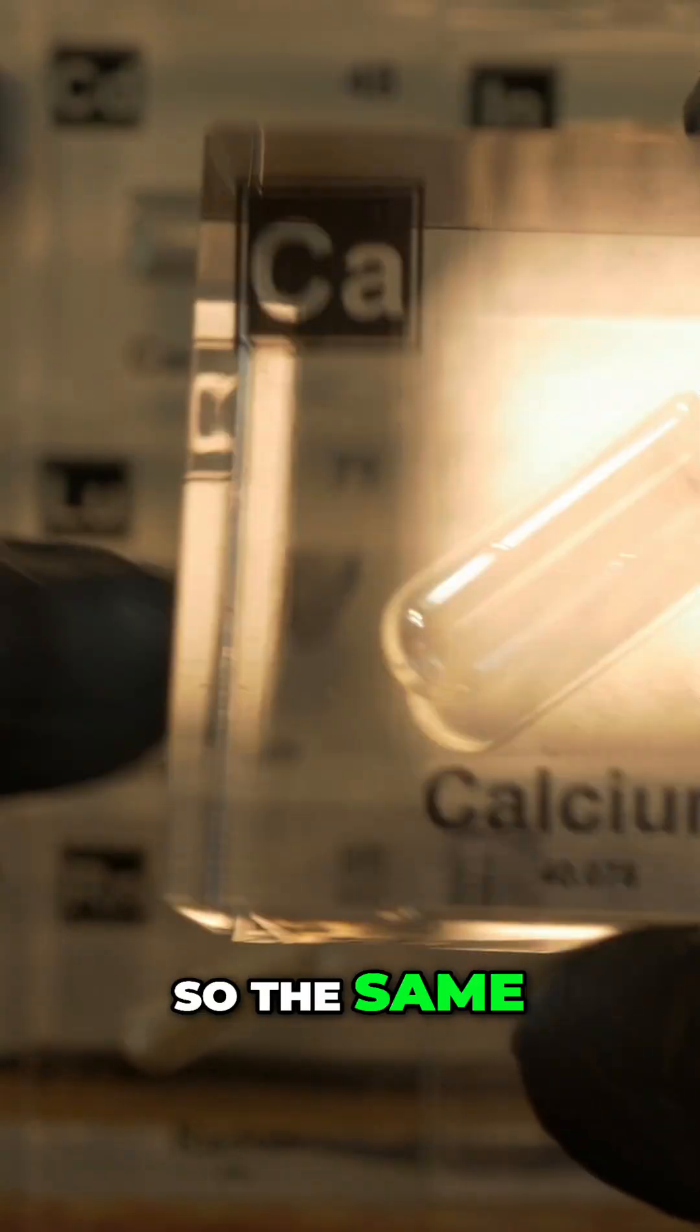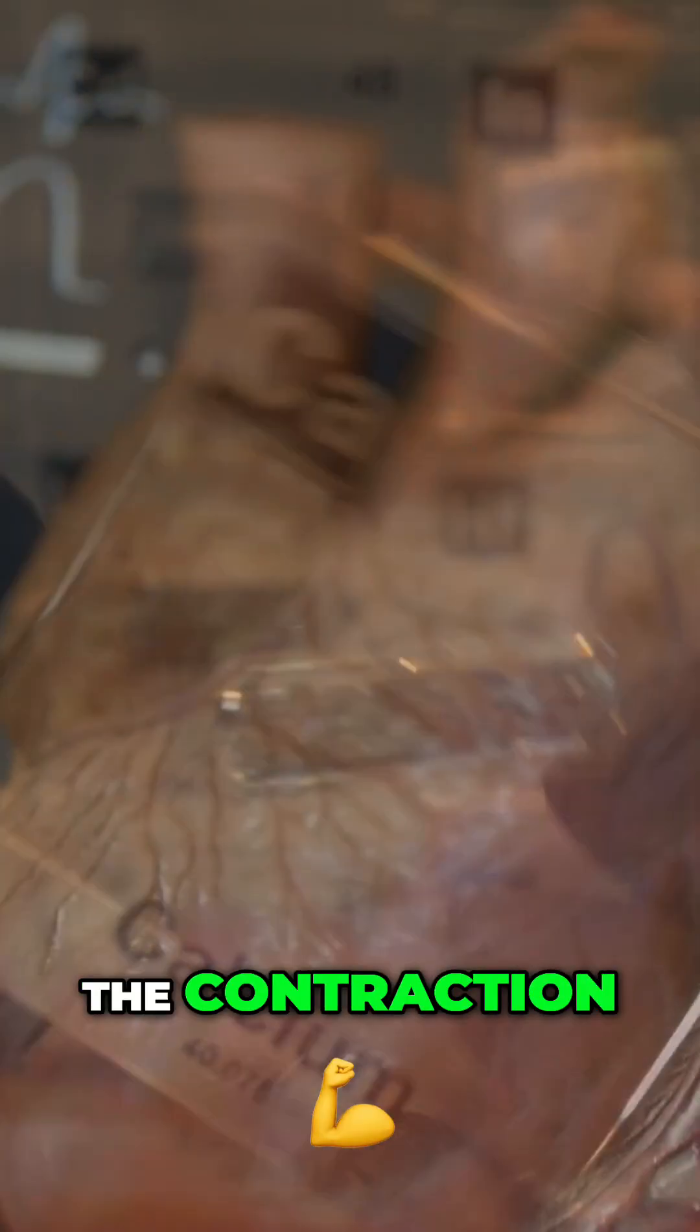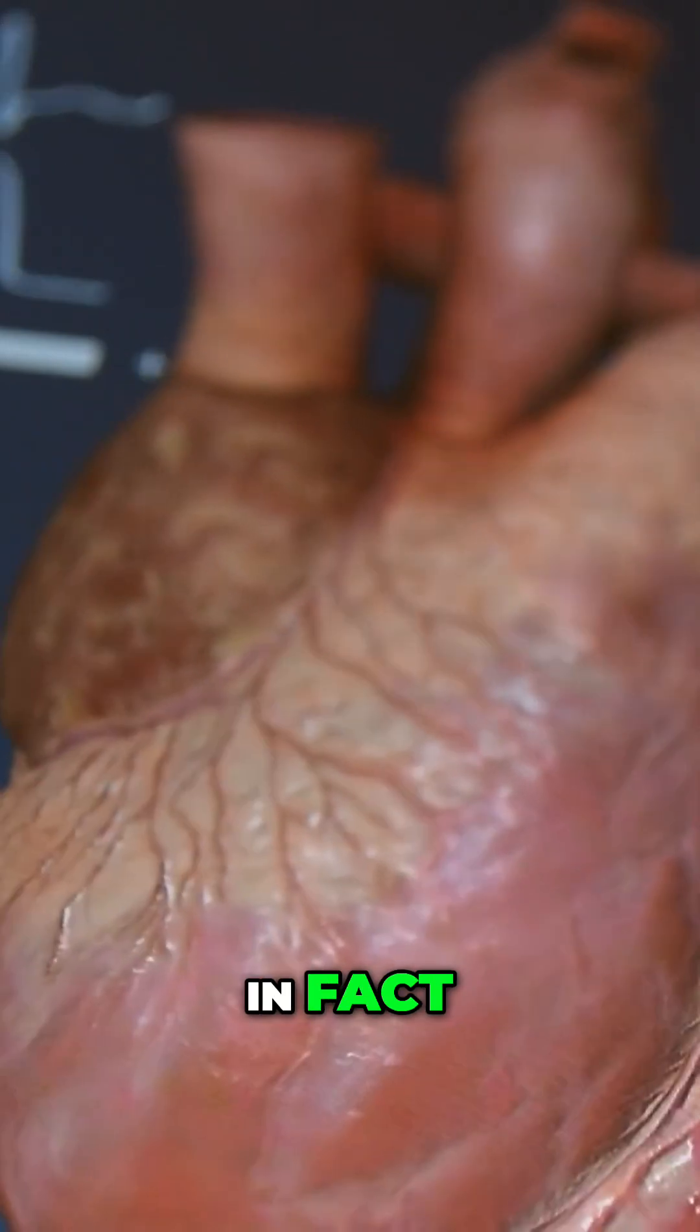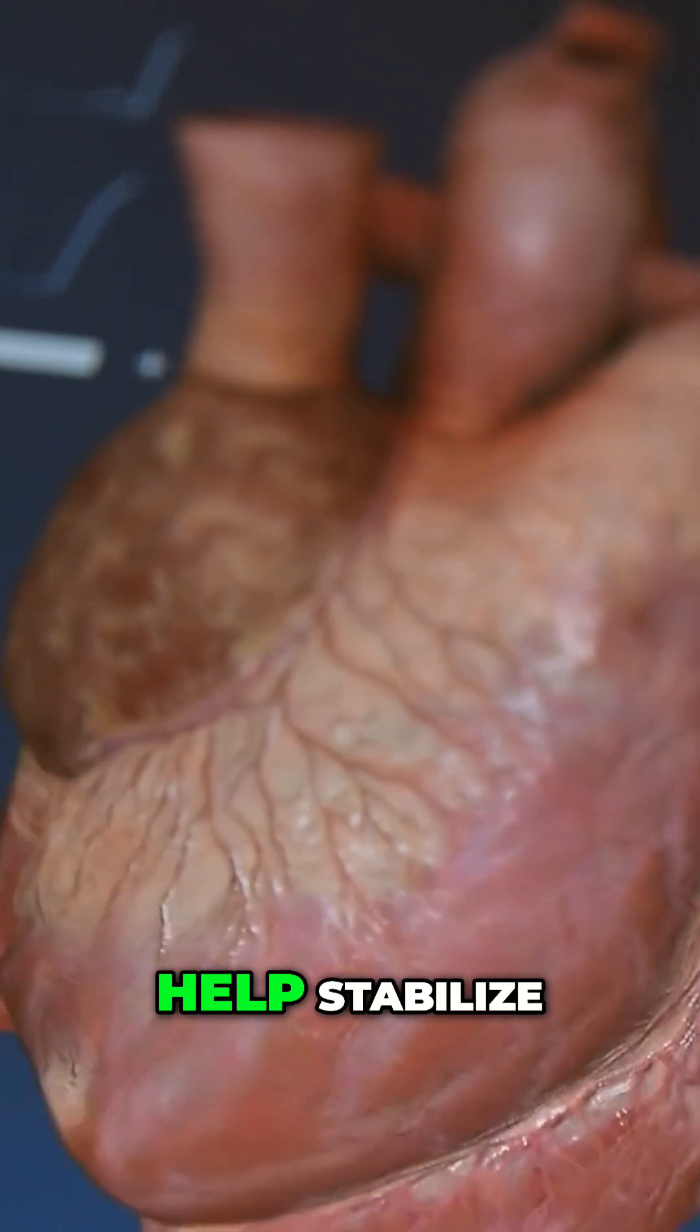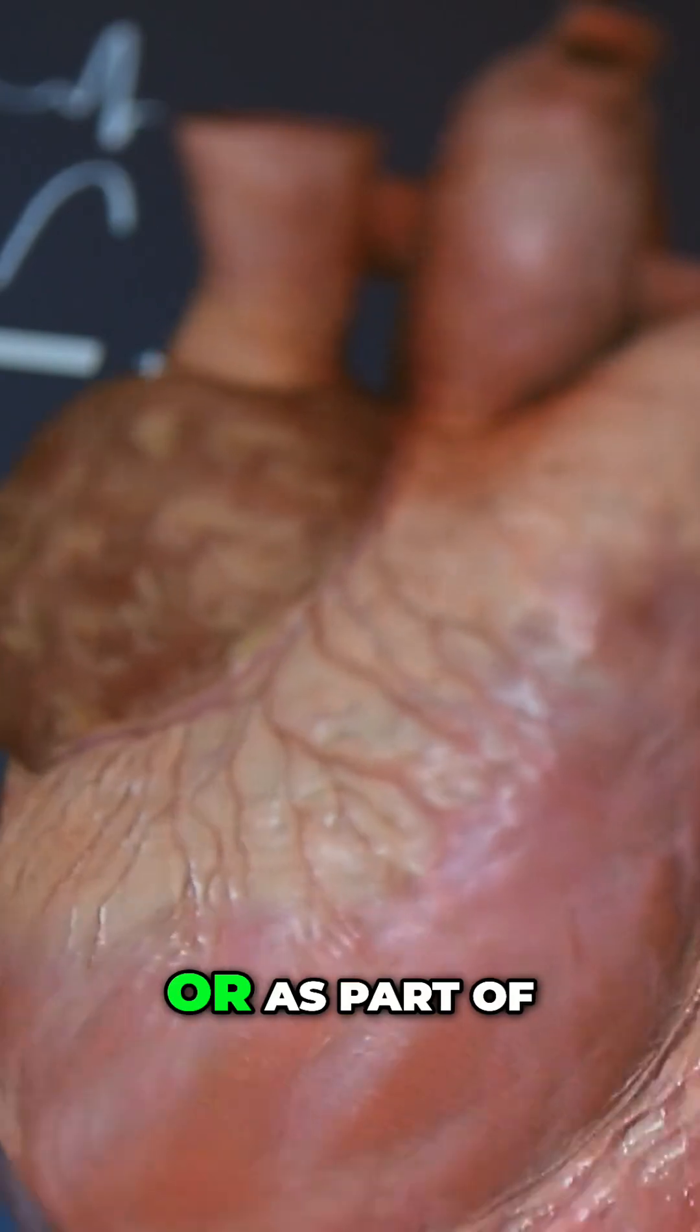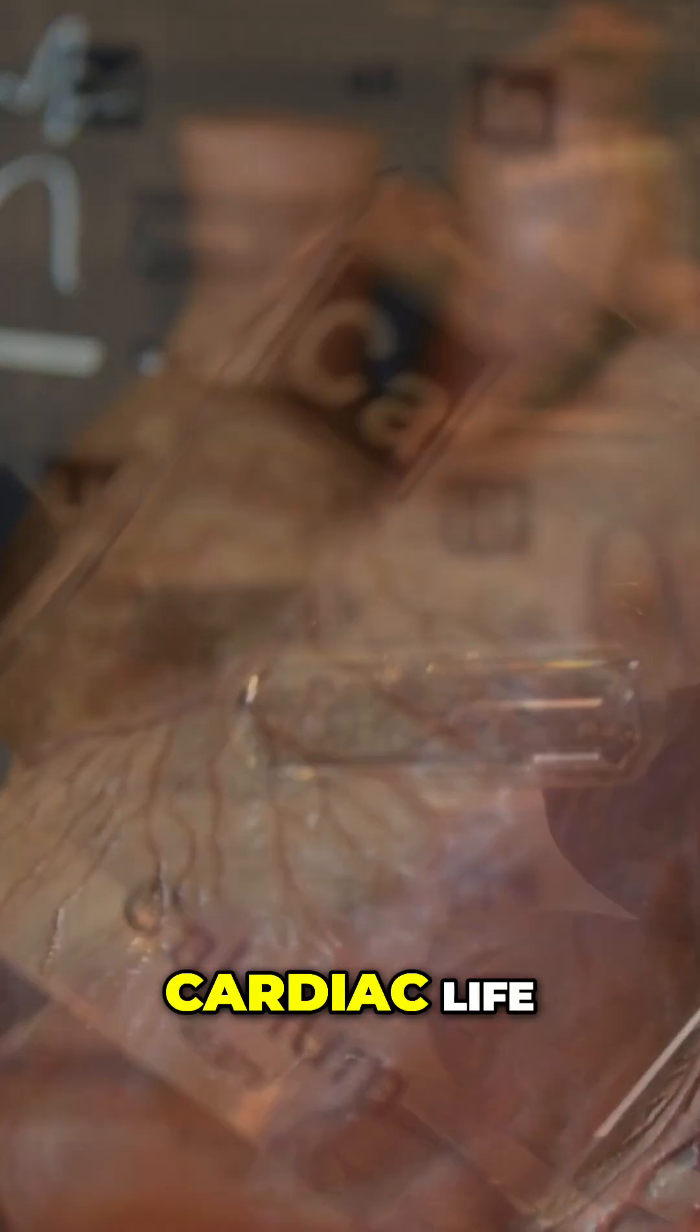The heart is a muscle, so the same idea. Calcium orchestrates the contraction of the heart muscle cells. In fact, hospitals use calcium injections in certain cases to help stabilize irregular heartbeats or as part of advanced cardiac life support because of its effect on the heart muscle and electrical signaling.